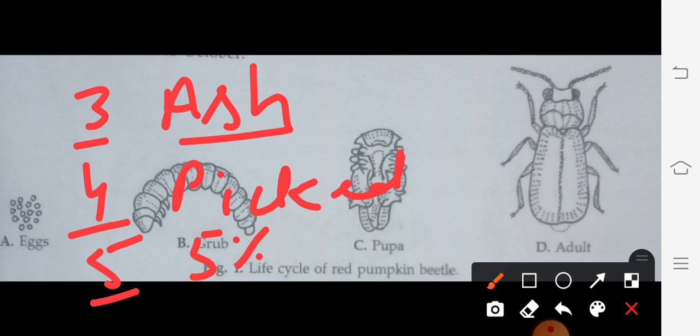And number 6: linden 1% at the rate of 250 liter per acre should be sprayed. We can save our vegetables from red pumpkin beetles. Thank you.